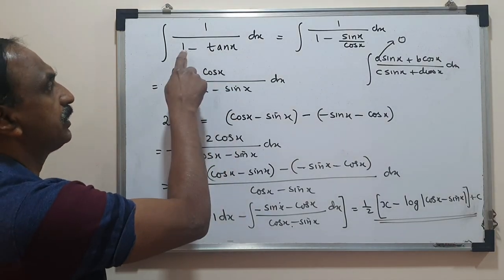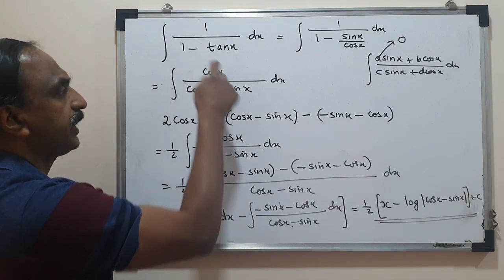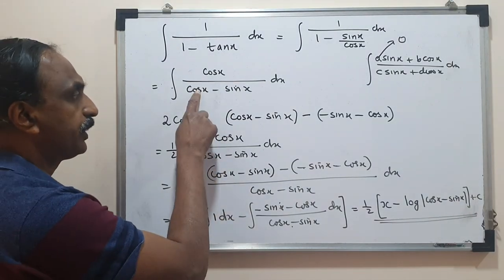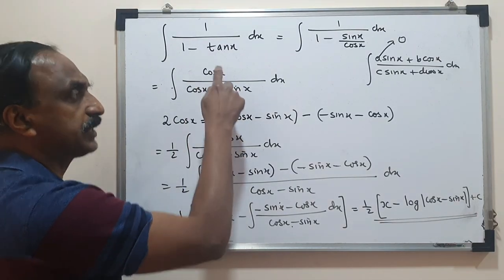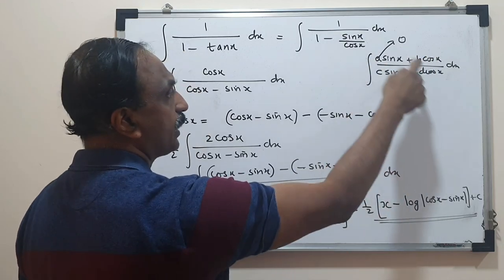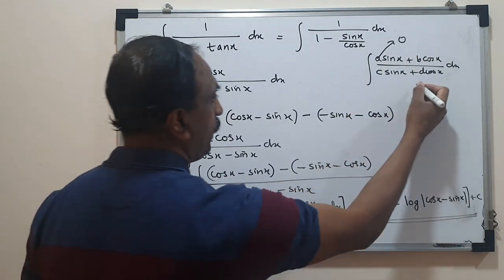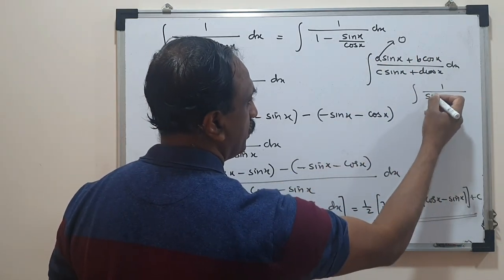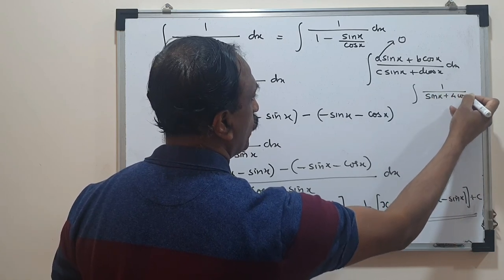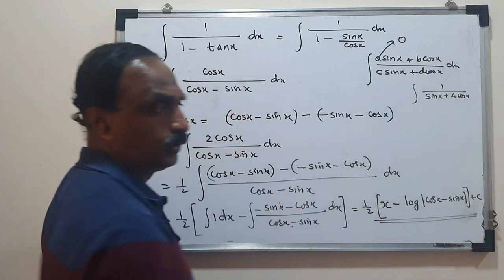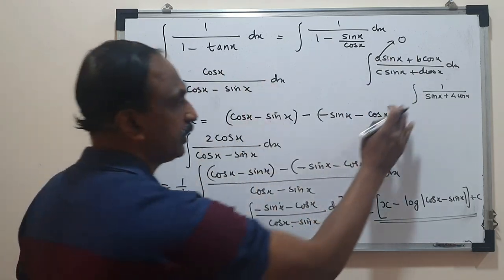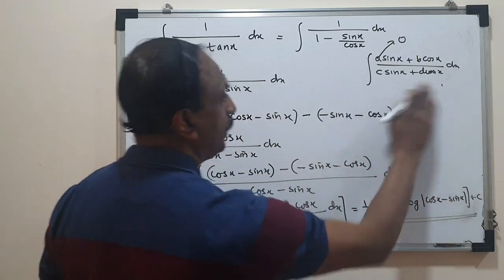If we have tan x or a combination like 2 + 3 tan x in numerator or denominator, convert to sin and cos. The splitting method requires both numerator and denominator to have sin and/or cos terms. This method cannot be applied if there is only a single term in the numerator — we have already learnt different methods for those cases. Both numerator and denominator must involve sin or cos for this technique to work.